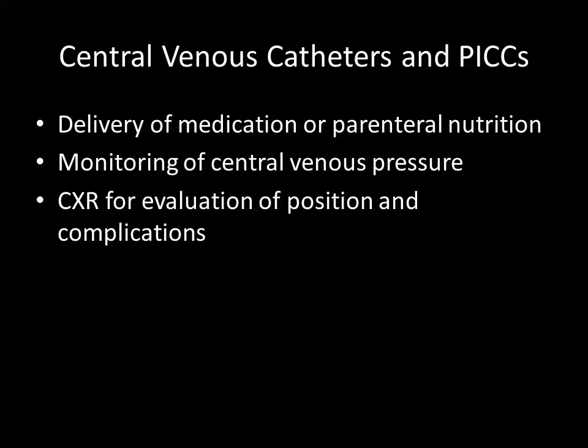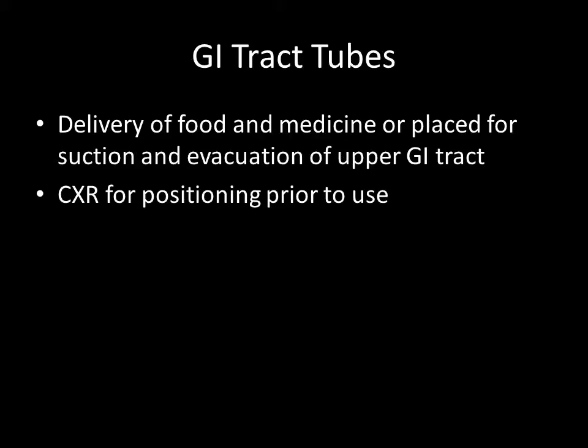The chest x-ray is really going to be looking for the position of the line, making sure it's in the right place, and ensuring there aren't any complications with insertion. For the GI tract tubes, it's pretty simple — there's a tube to put food through or to suck GI contents out. It's basically recognizing that you're looking at a GI tube and knowing where it's supposed to be going and what it's supposed to be doing.